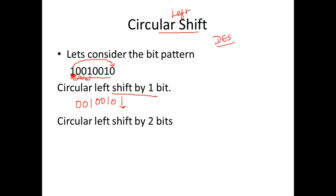You can also perform a circular left shift by any number of bits. For instance, if I perform a circular left shift of two bits on this pattern, I push the two leading zeros to the end, giving the result 100101 followed by those two zeros. That is the output of a circular left shift by two bits. You should never have confusion about what bitwise XOR, left shift, right shift, or circular left shift mean on a bit pattern.